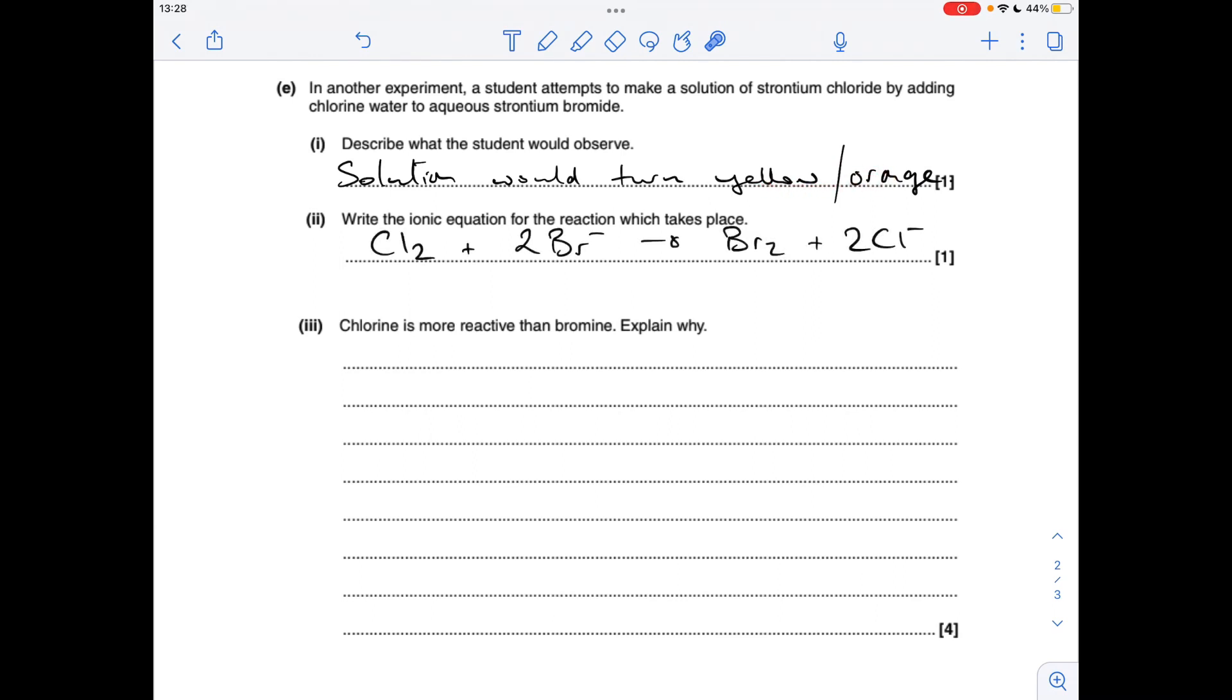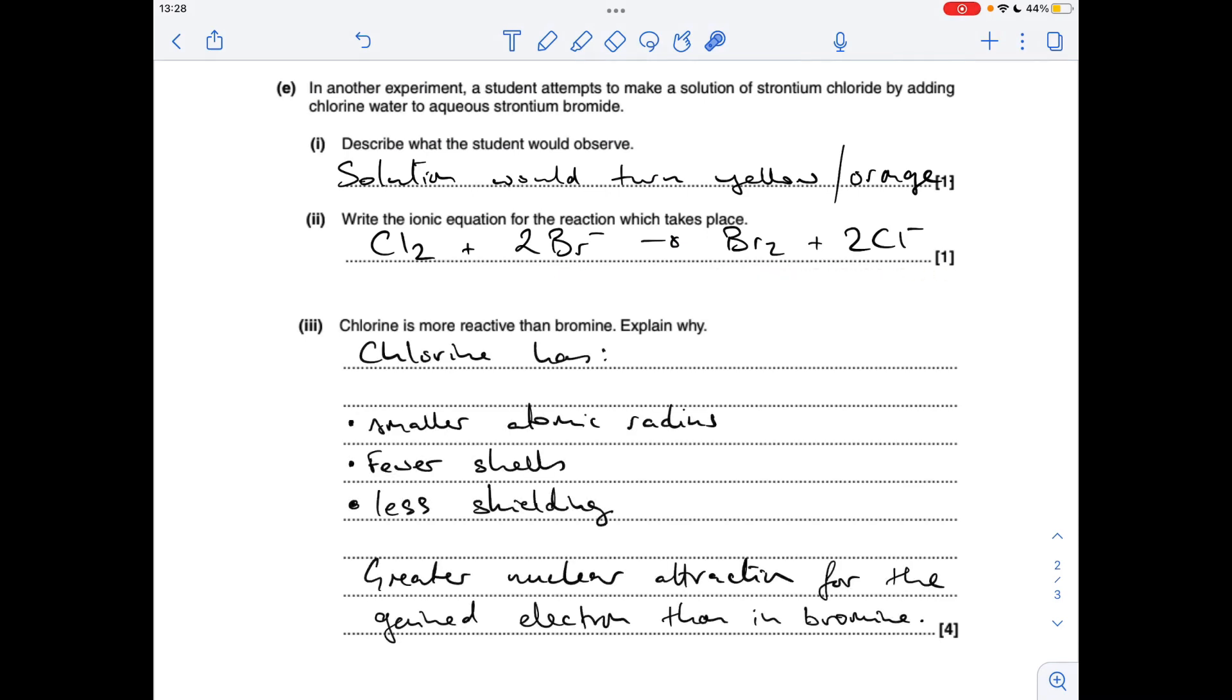The ionic equation for the reaction looks like that. And finally, an explanation of why chlorine is more reactive than bromine. We need to say that chlorine's got a smaller atomic radius, it's got fewer shells, therefore less shielding. And just remember what chlorine's doing - it's wanting to gain an electron. So because of these things, chlorine has a greater nuclear attraction for the gained electron than in bromine.